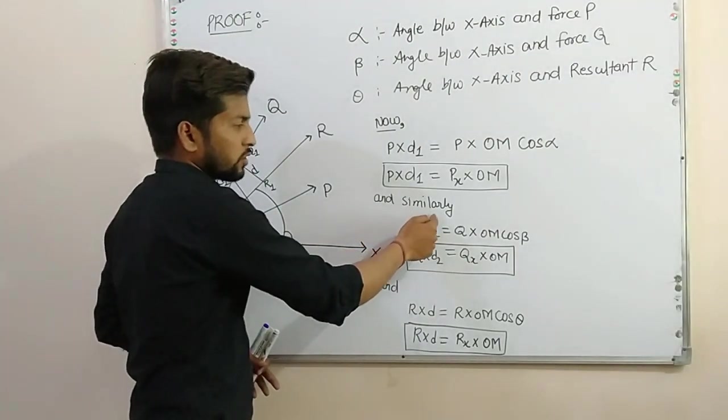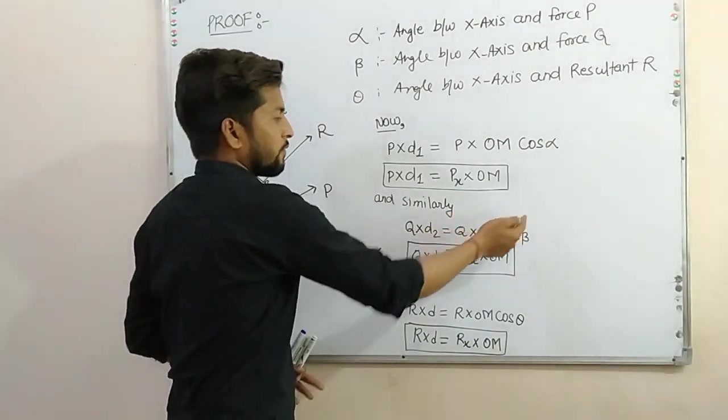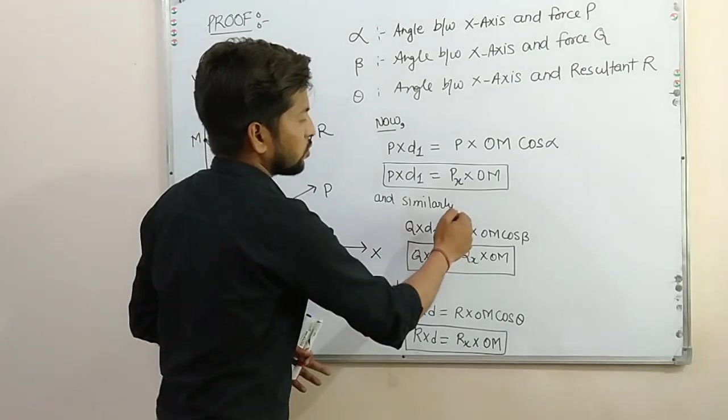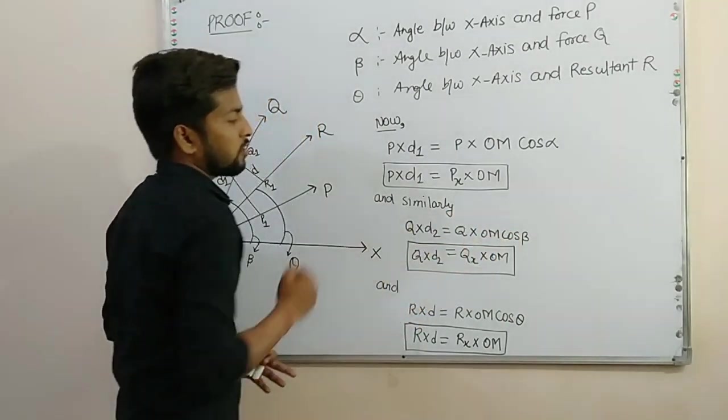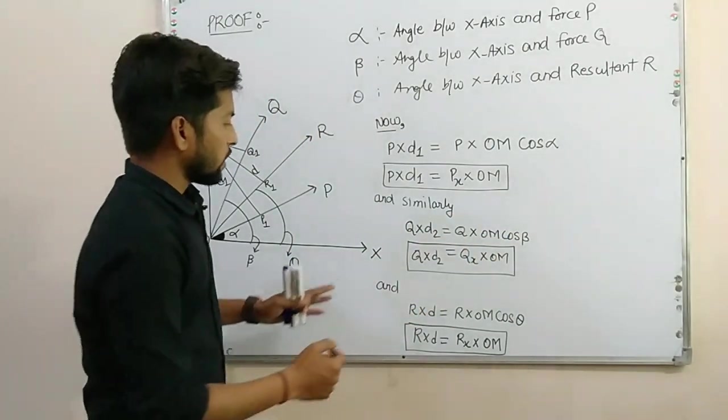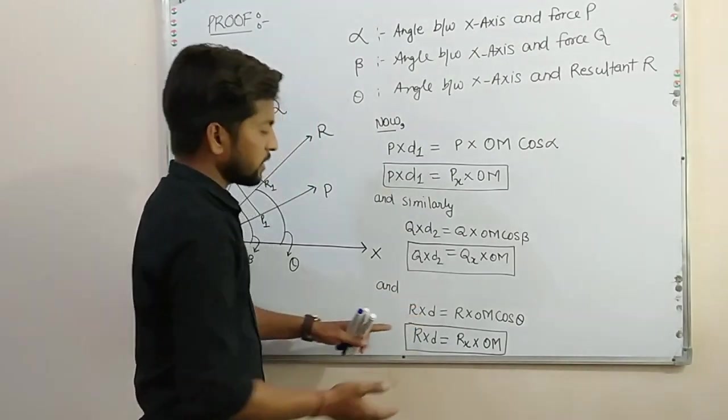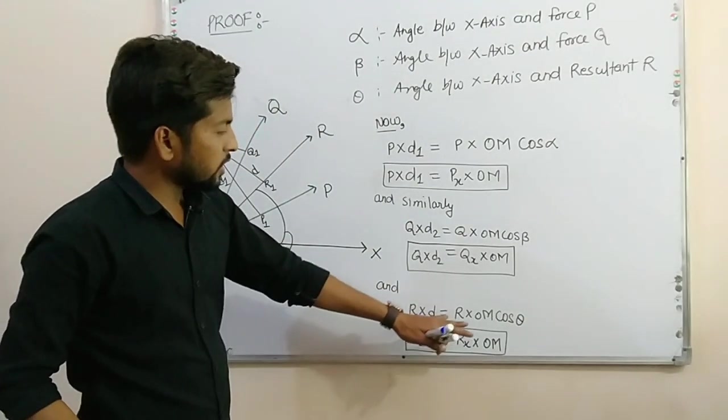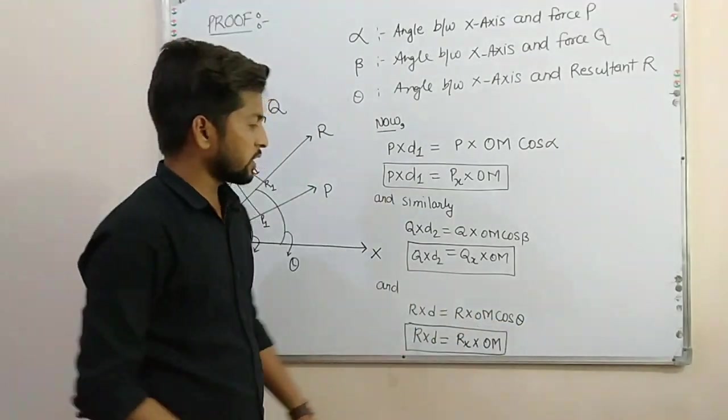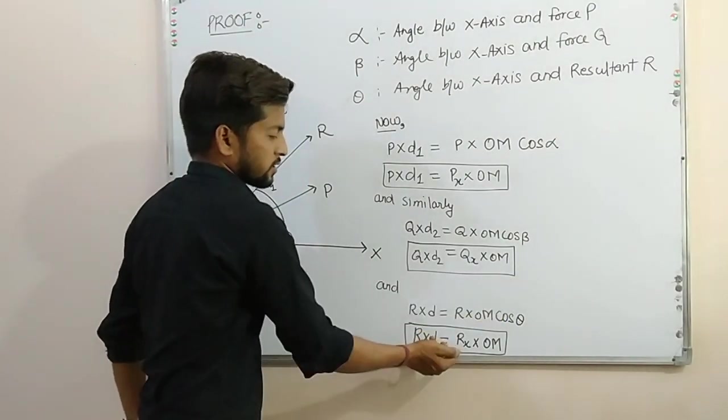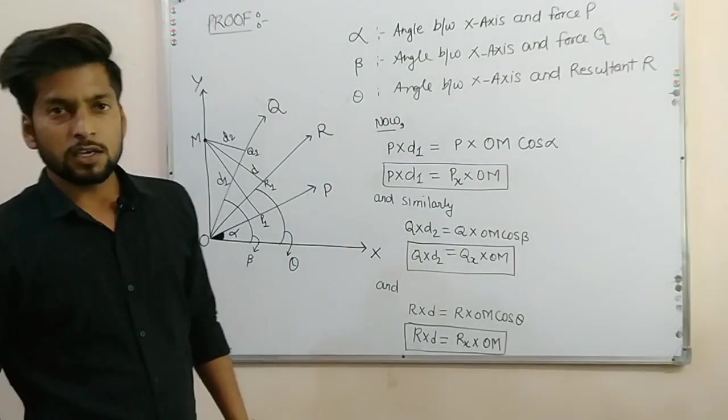Similarly, Q into D2 equal to Q into OM cos beta. Similarly, Q into cos beta is the horizontal component of Q. And similarly, resultant into D equal to R into OM cos theta. And R into cos theta is the horizontal component of the resultant.